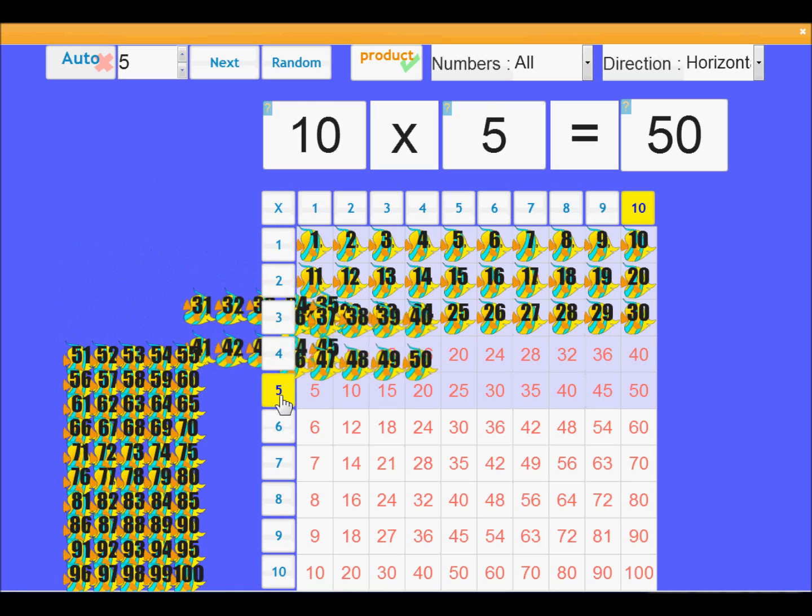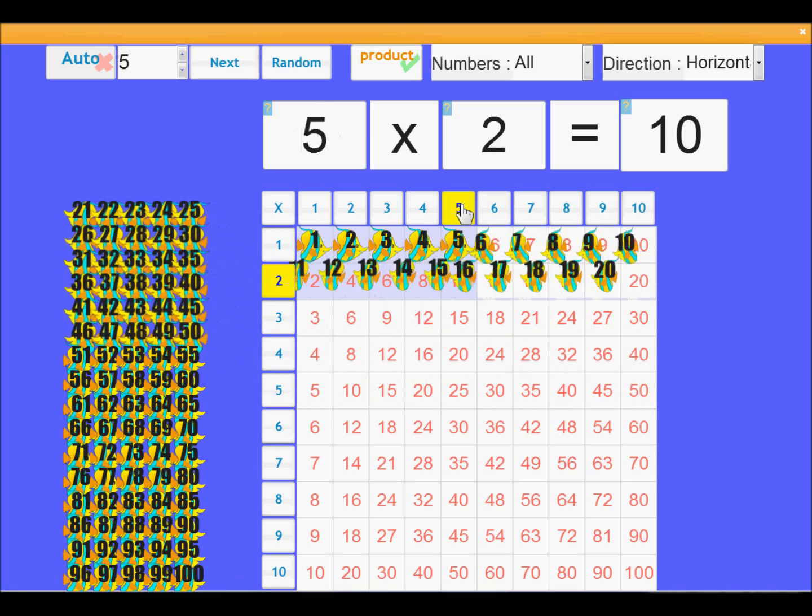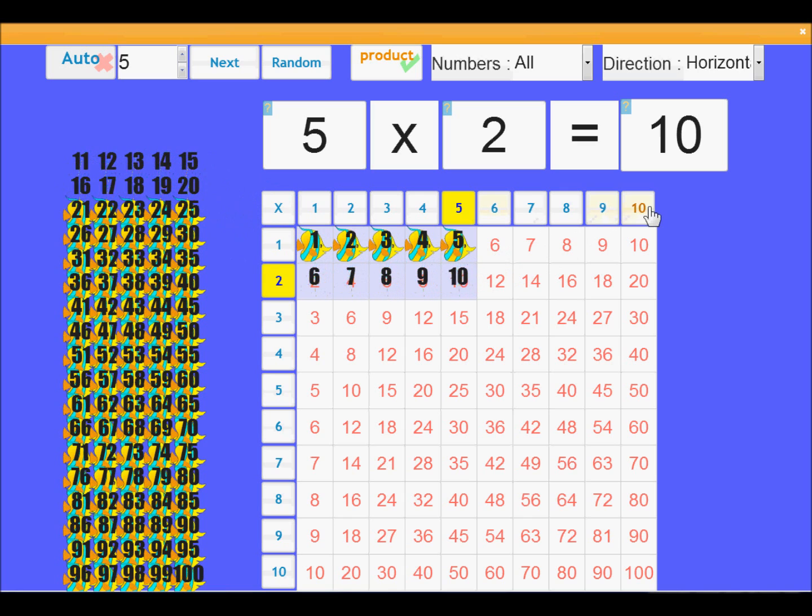At Visnos, we aim to provide visual representation of mathematical concepts. In this case, you can see the fish swim in or out of the tables, depending on the multiplication values.